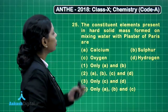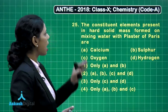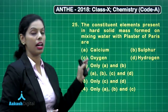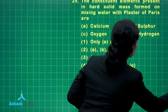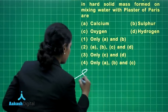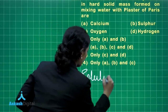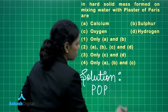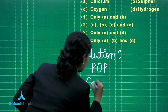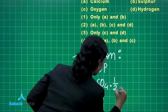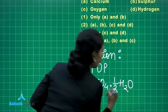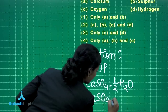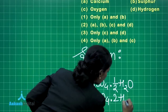Students, we have question number 25. The constituent elements present in the hard solid mass formed on mixing water with plaster of Paris are what? We have to identify the elements present in the hard mass formed after mixing water in plaster of Paris. Plaster of Paris, or POP, has the formula CaSO₄·½H₂O, and if you mix water to it, it forms gypsum — the hard solid mass — with the formula CaSO₄·2H₂O.